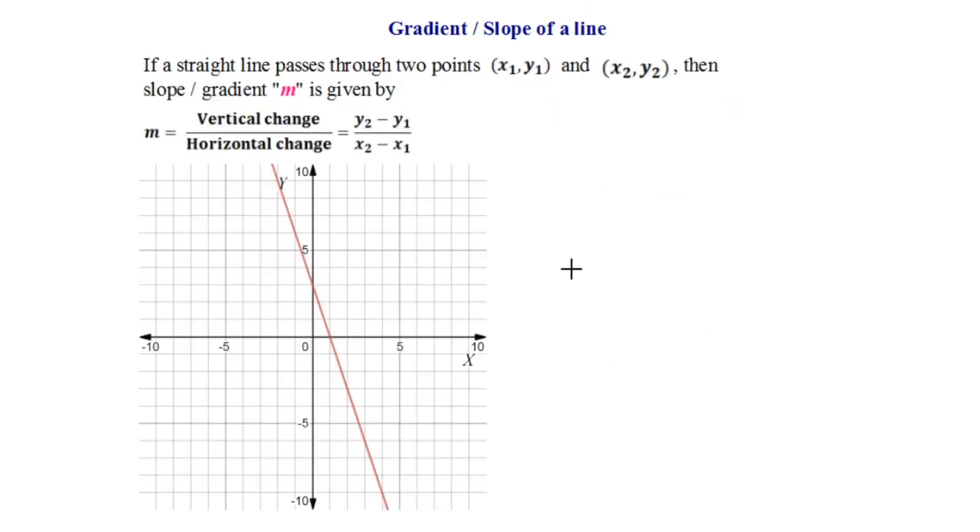Now let's understand the mathematical formula for gradient. The mathematical formula says that if a straight line passes through two points (x1,y1) and (x2,y2), then the slope or gradient m is given by vertical change upon horizontal change which is y2-y1 upon x2-x1. So now we'll use this formula to find the gradient of the line.